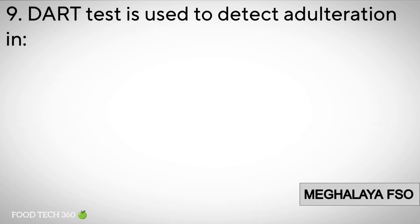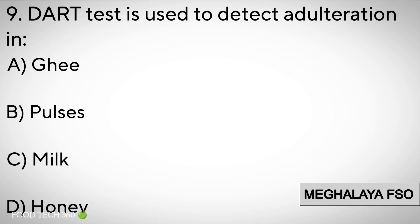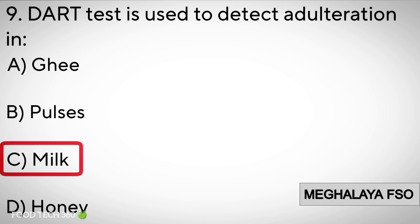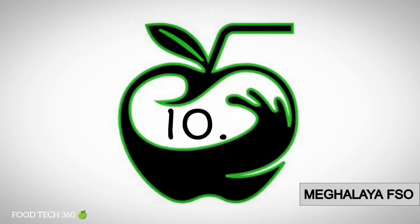Question number nine. The Dart test is used to detect adulteration in: A. Ghee, B. Pulses, C. Milk, D. Honey. Correct answer: C. Milk.